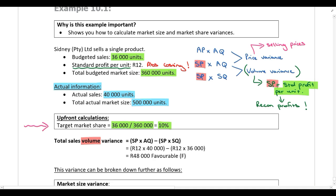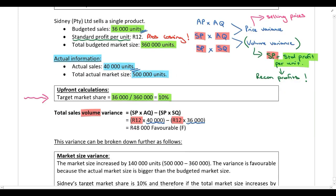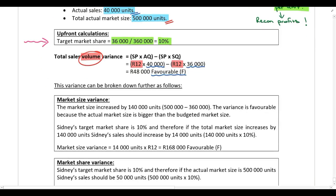The standard price is the standard profit per unit of R12. We compare the actual quantity sold of 40,000 units to the budgeted quantity of 36,000 units. Because they actually sold more than what they budgeted to sell, this variance is favorable. Since we've been given both the total budgeted and total actual market size, we can split the sales volume variance into a market size variance and a market share variance.